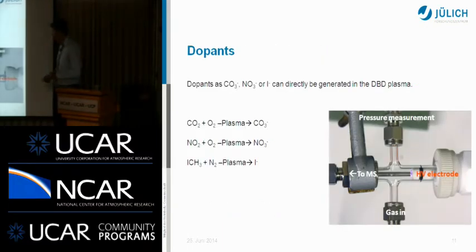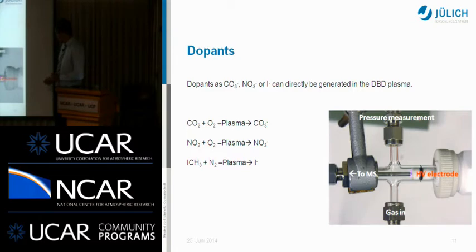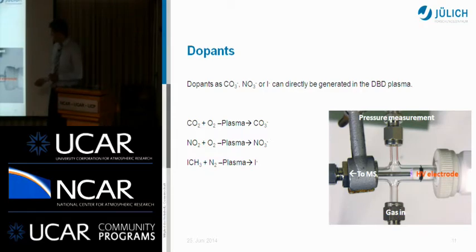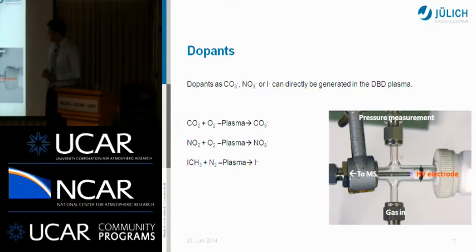This is our plasma — you can see the plasma burning. Here you have the high-voltage electrode coated with a dielectric, and you have the opposite electrode, which is a stainless steel capillary that samples the ions directly into the transfer stage. You have additional ports for pressure measurement and the gas inlet, and thereby you can control the properties of your plasma ion source.